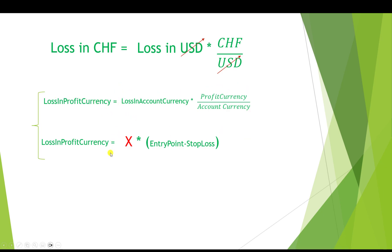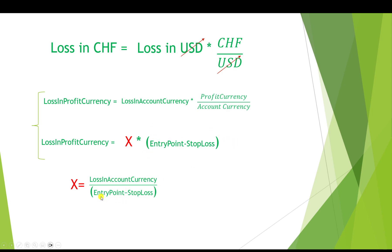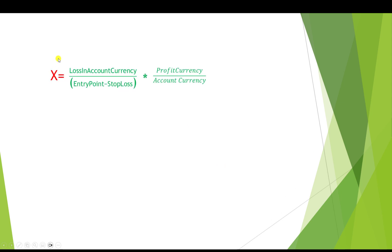Since the left-hand sides of both equations are the same, the right-hand sides must be equal too. Therefore we can solve for X: X = loss in account currency ÷ |entry point − stop loss| × (profit currency / account currency). This is our core equation.